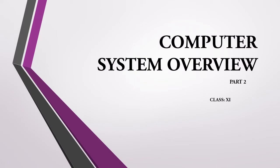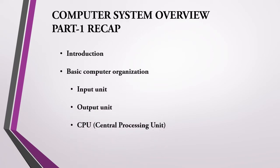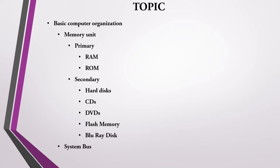Hello students, welcome to part 2 of chapter number 1, Computer System Overview. In the first part of chapter 1, we studied about computer hardware, software, basic computer organization, and three components of a computer: input unit, output unit, and CPU. Let us continue with other components. In this session, we are going to learn about memory unit and system bus.